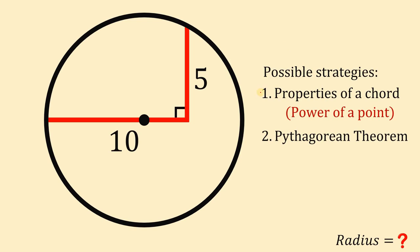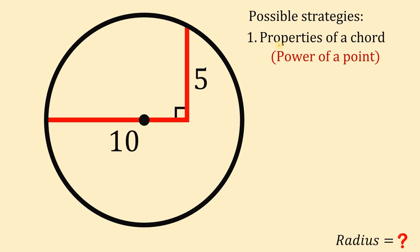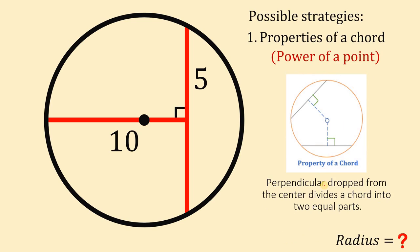Now let's start with our first strategy which is the use of properties of a chord and power of a chord. To use this strategy, what we are going to do is complete this segment that measures 5 to make this a chord. According to one of the properties of a chord, perpendicular drop from the center divides a chord into 2 equal parts.